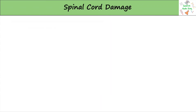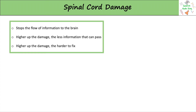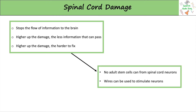If the spinal cord is damaged, then the flow of information between the brain and body will stop. The higher up the damage, the harder to fix, and the less information that can pass through. Fixing damage in the spinal cord is very hard, as no adult stem cells can form spinal cord neurons, so we have to use wires to stimulate the impulse instead.